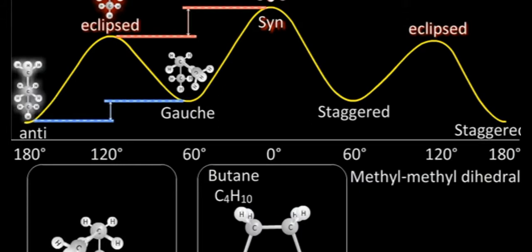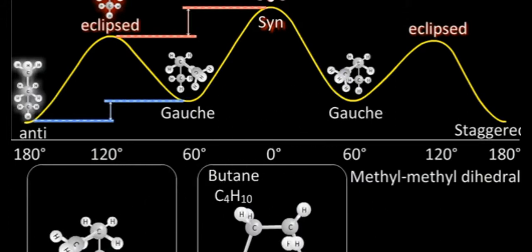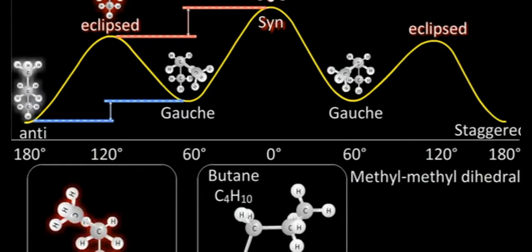Another 60 degree rotation gives back the gauche conformation. Another 60 degree rotation gives the eclipsed conformation in which the methyl groups are close to each other, and this conformation is less stable, but still it is more stable than the syn conformation.